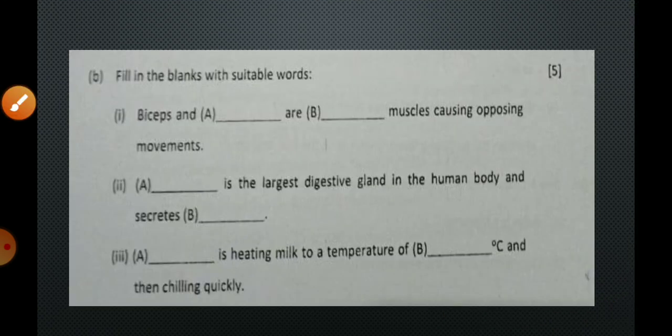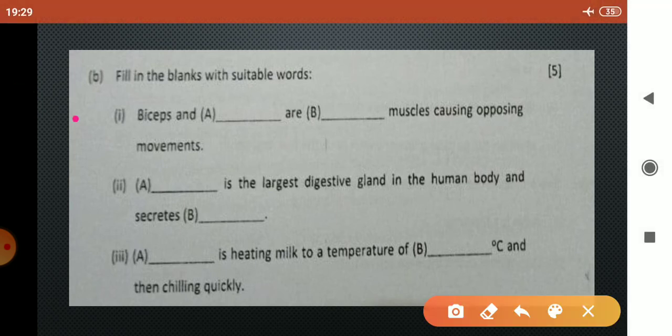Now children let us move on to the second part of question number 4. The first one is biceps and dash are dash muscles causing opposing movements. Antagonistic muscles are responsible for causing opposing movements. So the two muscles are biceps and triceps.